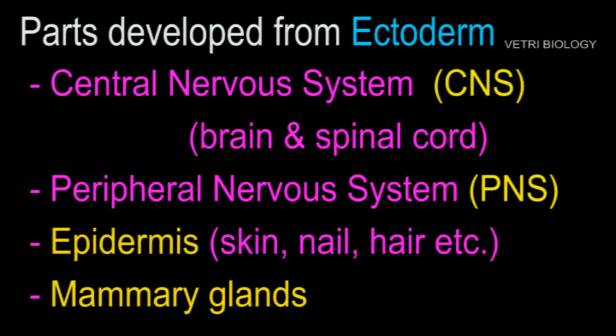From the ectoderm, the central nervous system — which includes the brain and spinal cord — and the peripheral nervous system, collectively called CNS and PNS, are developed. Also developed from ectoderm are the epidermis, that is skin, nails, hair, and mammary glands.